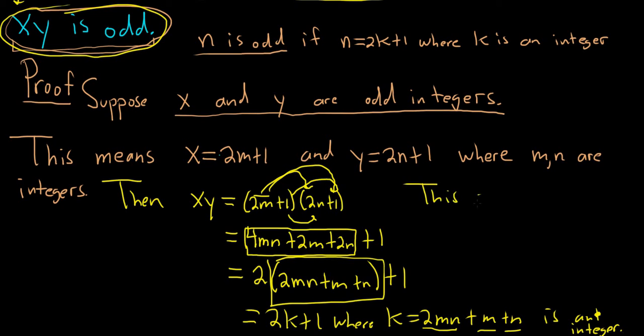And what does this mean? This means, or this shows, x times y is odd. And that completes the proof.